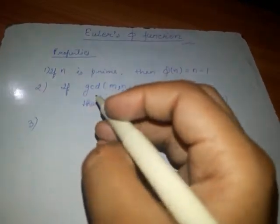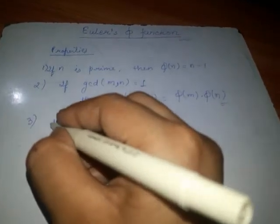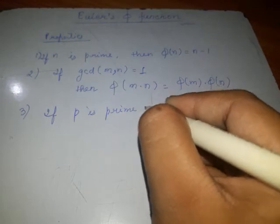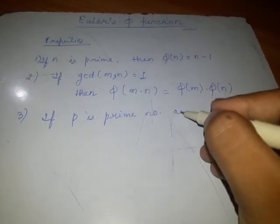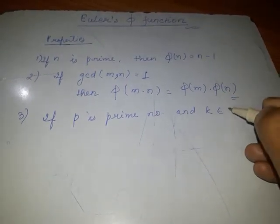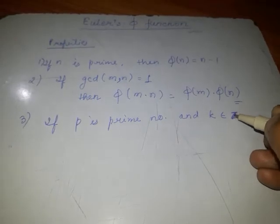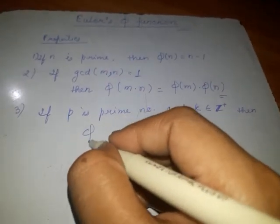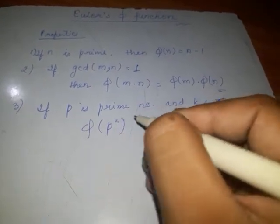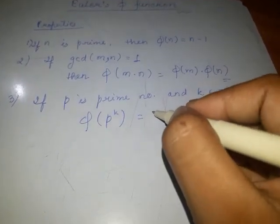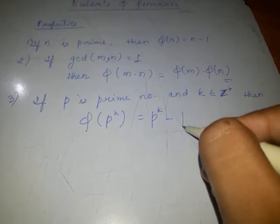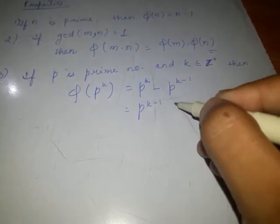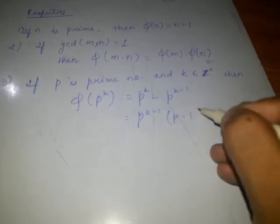The third property is: if p is a prime number and k is any positive integer, then phi of p power k equals p power k minus p power k minus 1, or we can reduce it to p power k minus 1 times p minus 1.